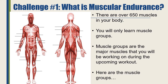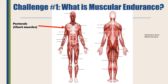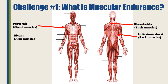Here are the muscle groups. Let's start with the chest muscles — those are called pectorals. Go ahead and repeat the word pectorals. The back muscles are called the latissimus dorsi. The upper back muscles are also called the rhomboids. Go ahead and repeat the word rhomboids.